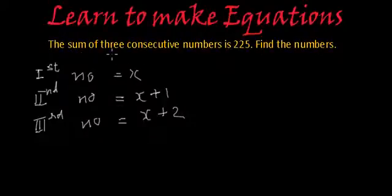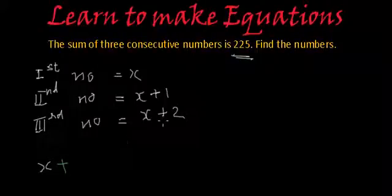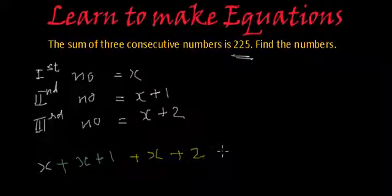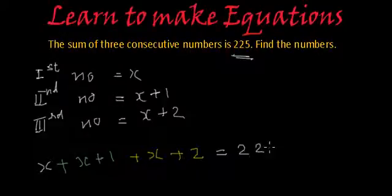And what are they saying? They are saying the sum of three consecutive numbers is 225. That means if you add x plus the second number which is x plus 1, and then the third number which is x plus 2, this is equal to 225. And now what we have to do?